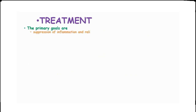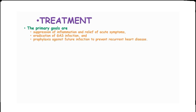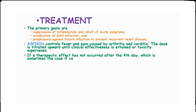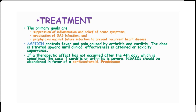In treatment, the primary goals are to suppress the inflammation and relieve the acute symptoms, to eradicate the group A streptococcal infection, and to prophylax against future infection or prevent recurrent heart disease. Aspirin controls fever and pain caused by arthritis and carditis, and the dose of aspirin is titrated upward until clinical effectiveness is attained or toxicity supervenes. If a therapeutic effect has not occurred after the fourth day, or if carditis or arthritis is severe, non-steroidal anti-inflammatory drugs should be abandoned in favor of corticosteroids, preferably prednisone.